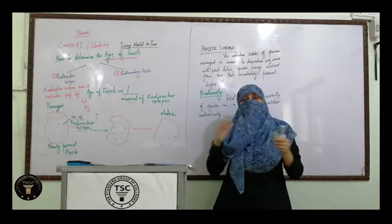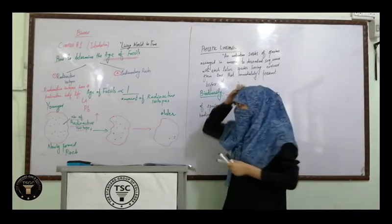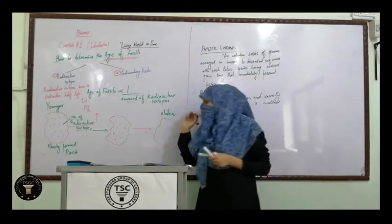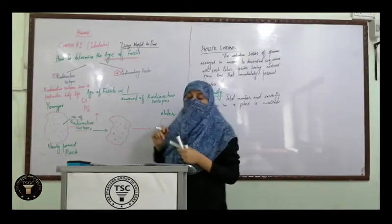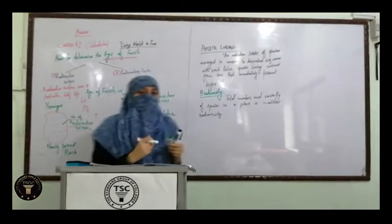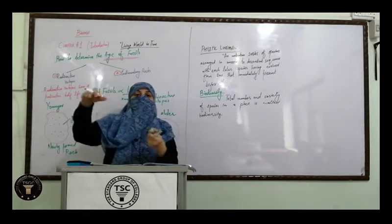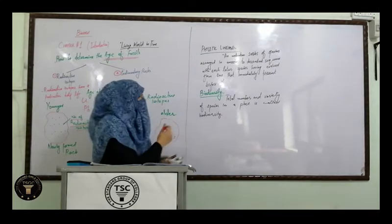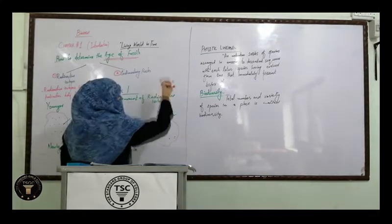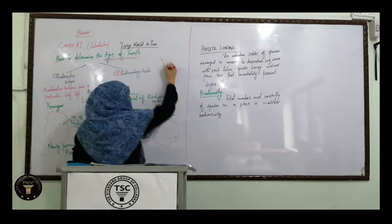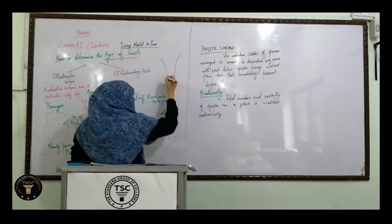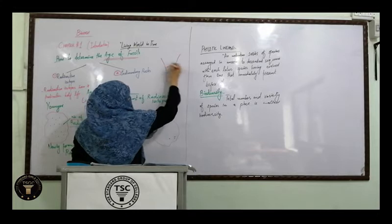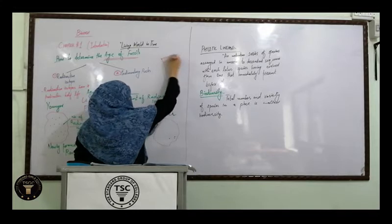Next, sedimentary rocks — how do sedimentary rocks form? They consist of layers: first layer, second, third, fourth, fifth, sixth — layer upon layer like a rock.